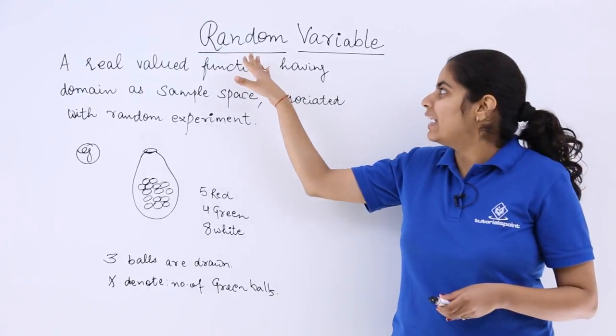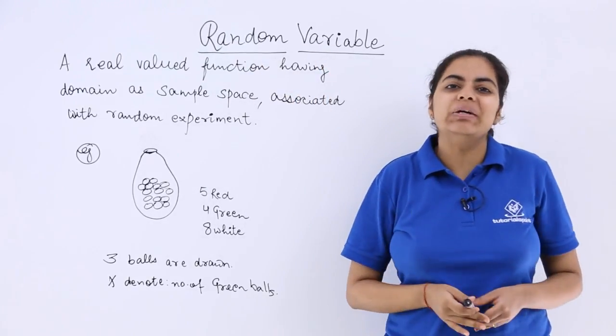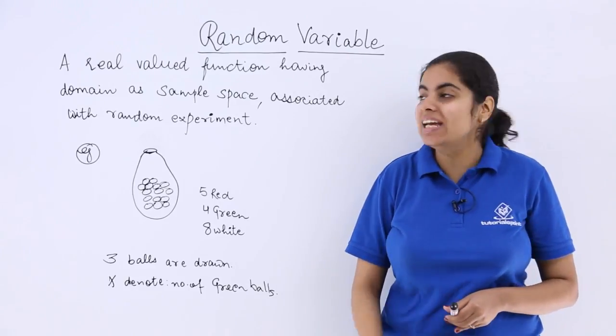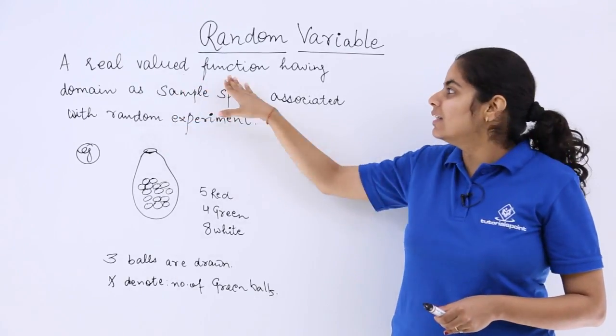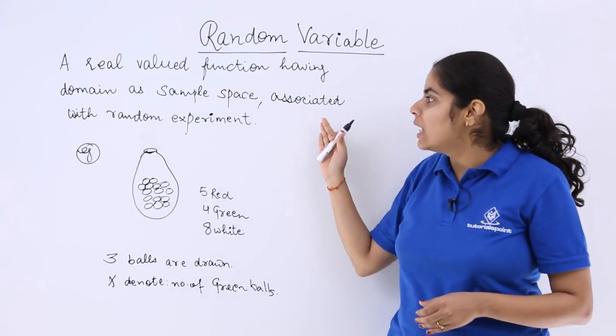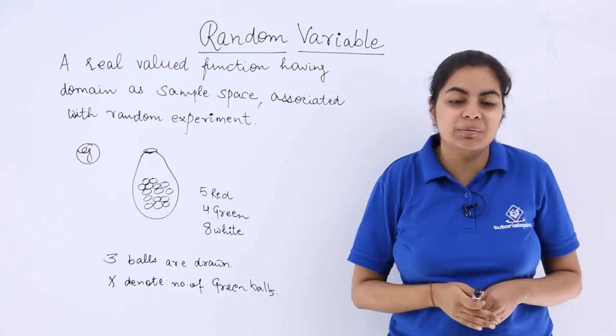Now let's start with random variable. Random variable is important in this section of probability. The definition says a real valued function having domain as the sample space associated with a random experiment.